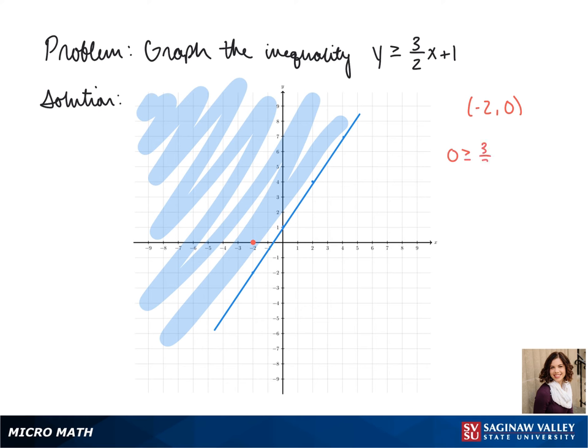So I pick negative 2, 0. When we plug in 0 for y and negative 2 for x, we get 0 is greater than or equal to negative 3 plus 1, which gives us 0 is greater than or equal to negative 2.